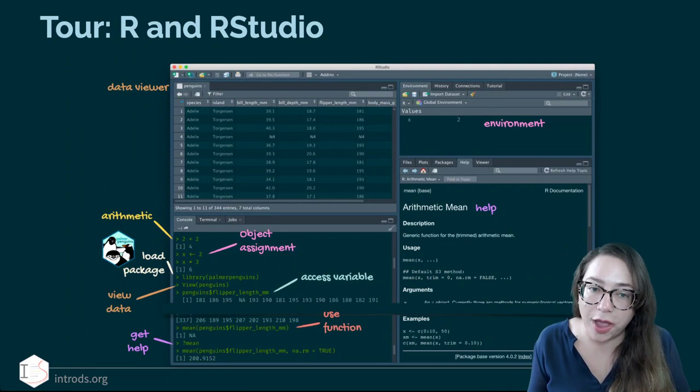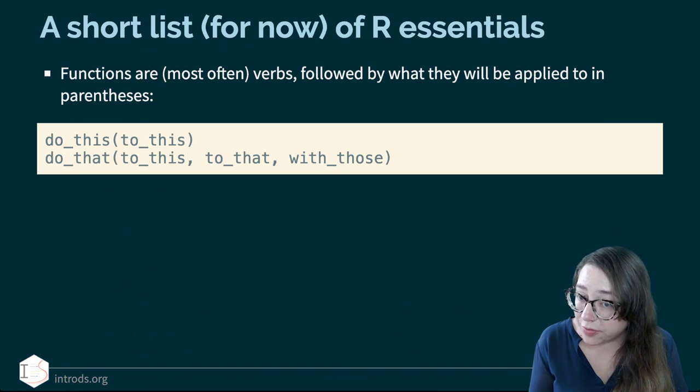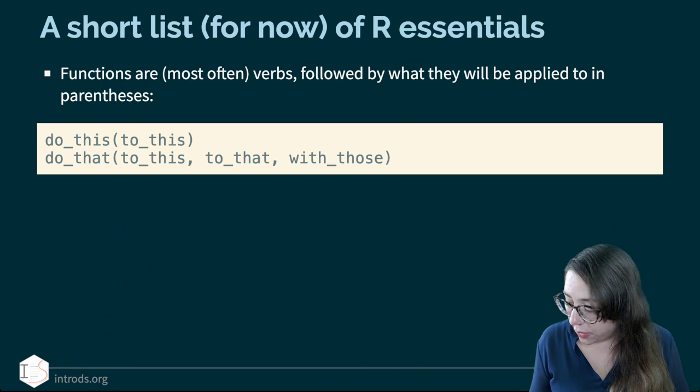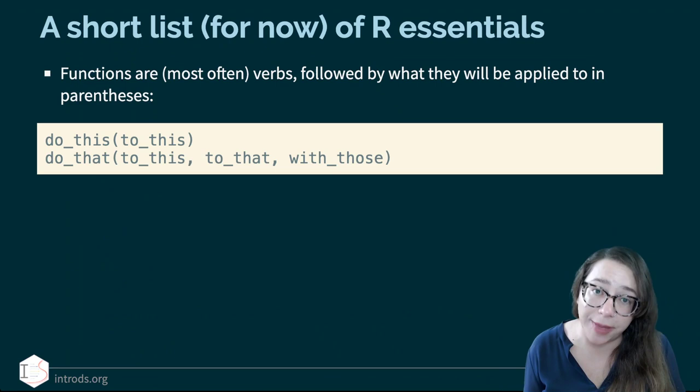You're going to start by doing that both during the application exercises throughout these videos and also on the workshop on Friday. A short list of R essentials for now: functions are most often verbs, followed by what they will be applied to in parentheses — so we might say 'do this to this': a verb and then a noun, or 'do that to this, to that, with those' — you can have additional arguments passing to your function as well.